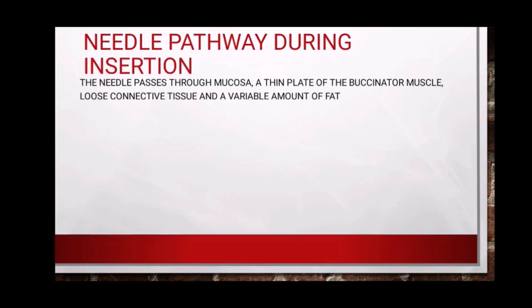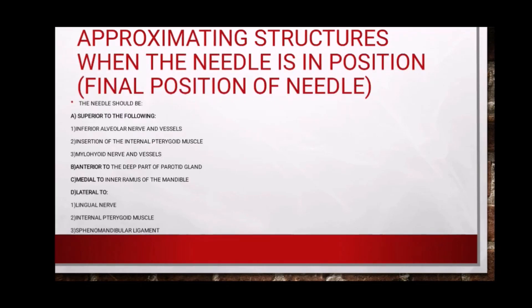The needle pathway during insertion: the needle passes through the mucosa, a thin plate of the buccinator muscle, loose connective tissue, and a variable amount of fat. When the needle is in its final position, it should be superior to the inferior alveolar nerve and vessels, insertion of the internal pterygoid muscle, and mylohyoid nerve and vessels. It should be anterior to the deep part of the parotid gland, medial to the inner ramus of the mandible, and lateral to the lingual nerve, internal pterygoid muscle, and the sphenomandibular ligament.